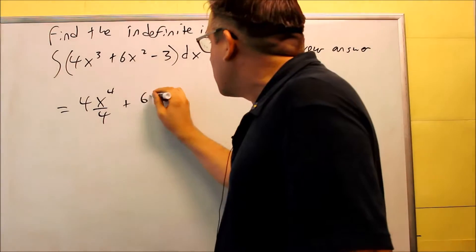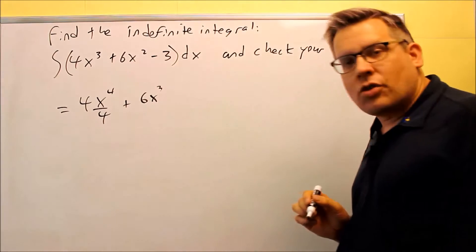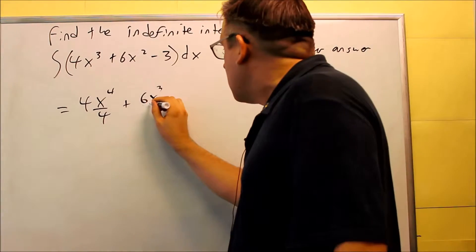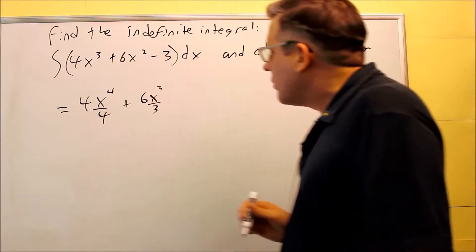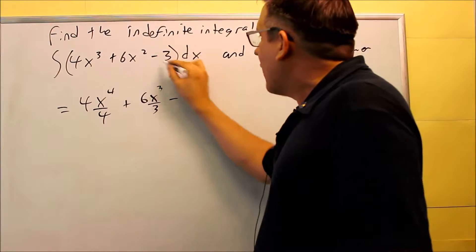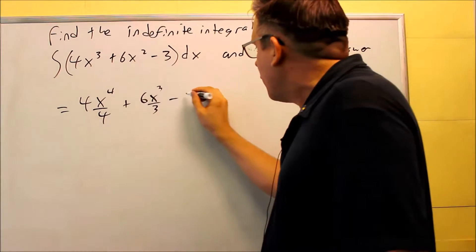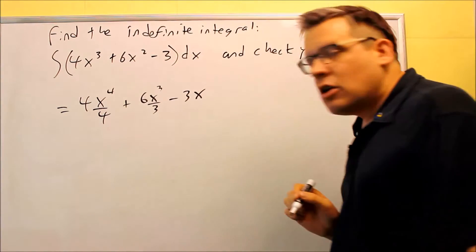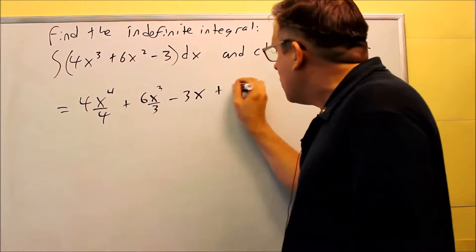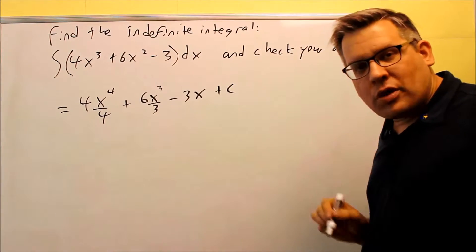Next, I have 6x, going to raise the power by 1 to the third power, then divide by 3. If I have a number that's by itself, you're just going to get an x put next to it. And don't forget, you need to put the plus c on it.